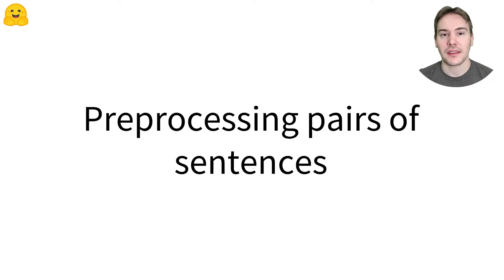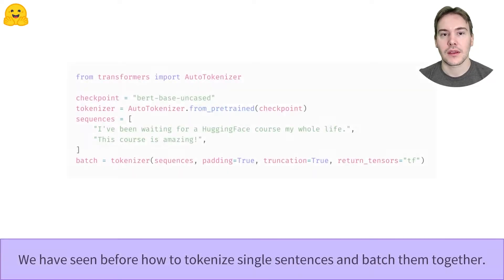How to pre-process pairs of sentences? We have seen how to tokenize single sentences and batch them together in the batching inputs together video. If this code looks unfamiliar to you, be sure to check that video again.